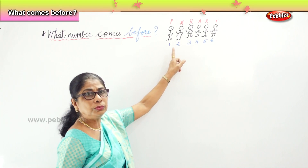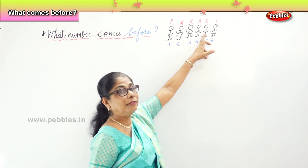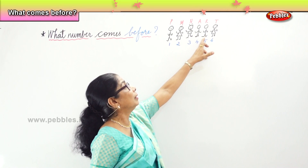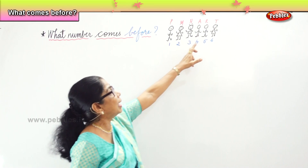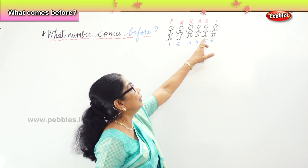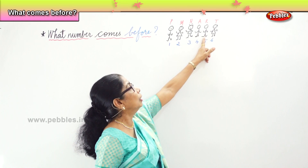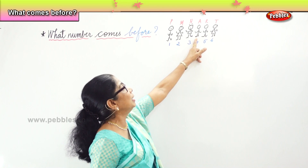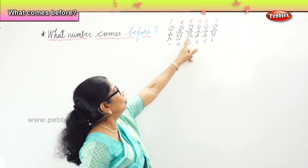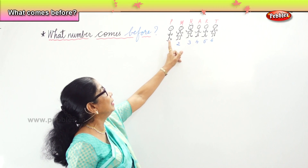What number comes before 2? 1. Here we have Raja. Raja is standing before Tina. Who is before Tina? Raja. Who is before Raja? Ajay. Who is standing before Ajay? Nina. Who is standing before Mary? Peter.